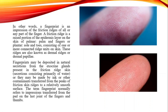Fingerprints may be deposited through natural secretions from the exocrine glands present in the friction ridge skin — secretions consisting primarily of water — or they may be made by ink or other contaminants transferred from the peaks of friction skin ridges to a relatively smooth surface. The term fingerprint normally refers to impressions transferred from the pad on the last joint of the fingers and thumbs. If you have material like grease or ink on your hand and touch a surface, you transfer visible fingerprints. Even without such material, sweat leaves traces on any surface.